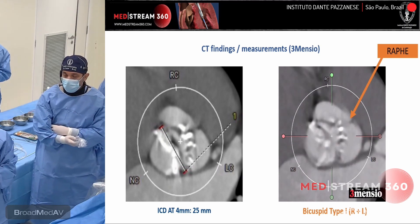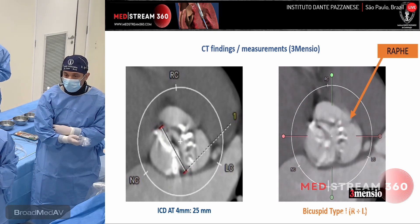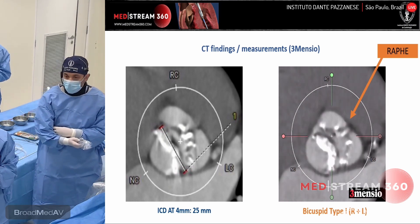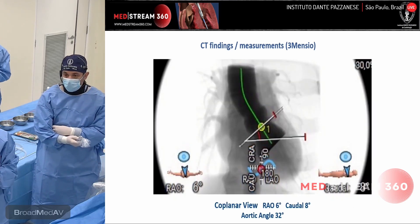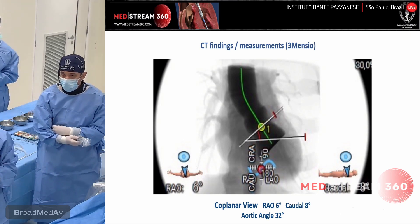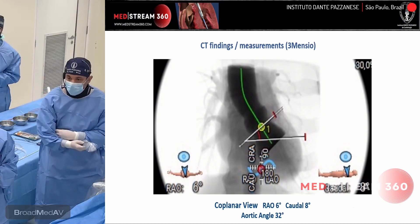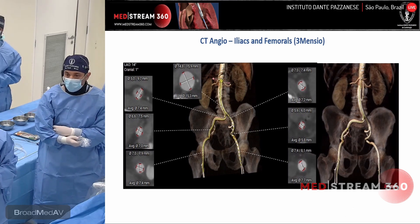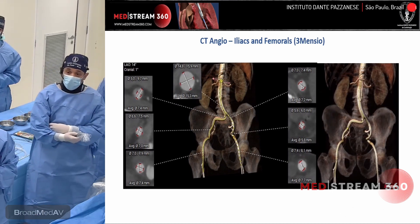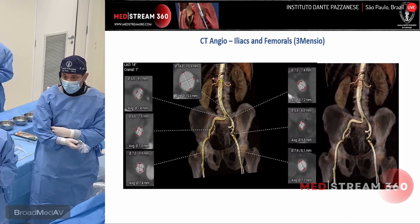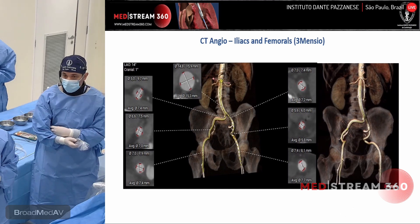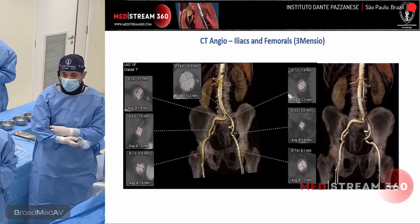Here you can see some images taken from the aortic valve. It seems to be a raft between the right and the left coronary cusp. You can see that the valve is very calcified. This is the projection estimated from Tri-Mention — area 06, caudal 8. Here you can appreciate the 3D reconstruction of the iliac and femoral vessels. This patient has no lesions; the diameters are good, but he has a lot of tortuosity on the iliac vessels. So this is one of the main challenges for this case.